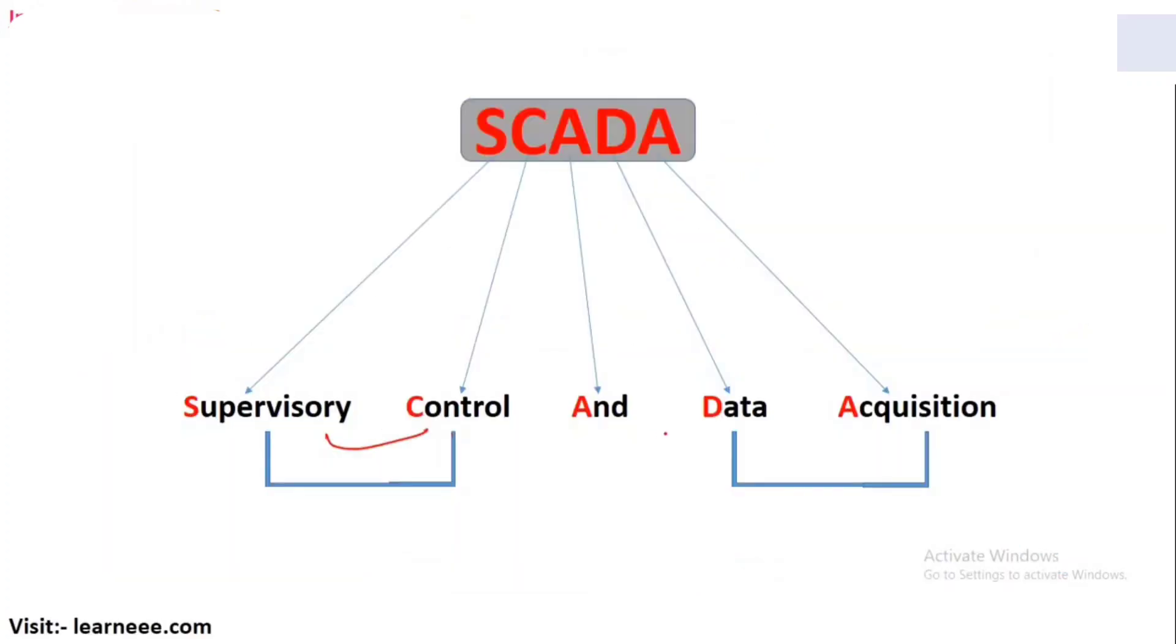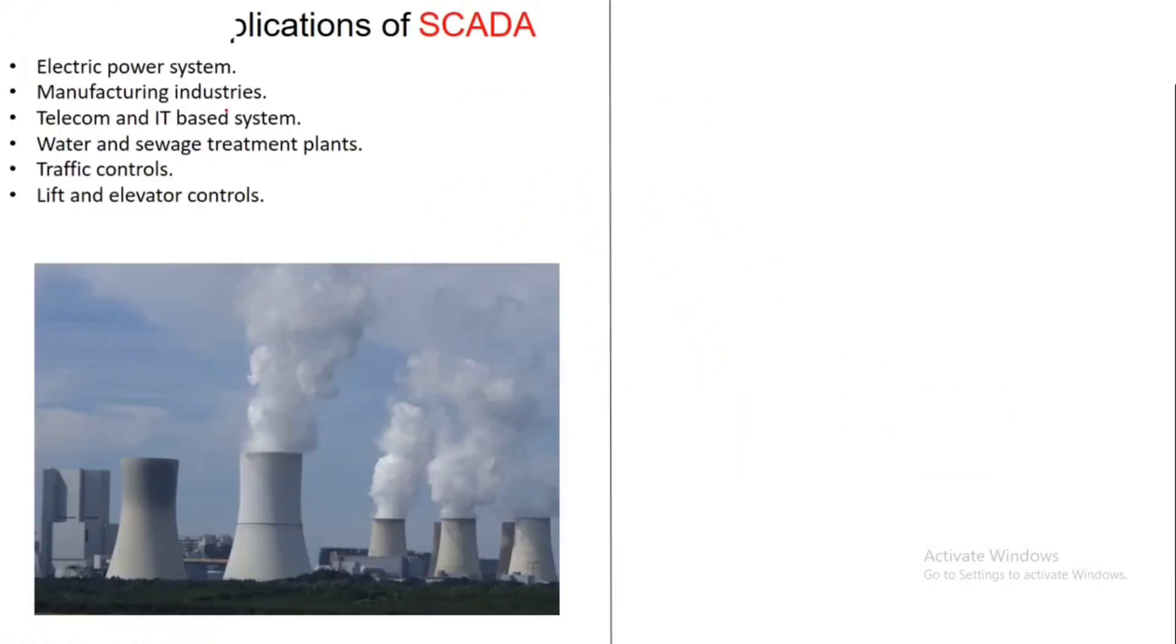The different applications where SCADA is used include electric power systems, civil systems, manufacturing systems, telecom and IT based systems. We use SCADA in water treatment plants and water distribution systems. You can see traffic control, traffic lights, traffic signal lights also control SCADA. We also have to control lift and elevators with SCADA.